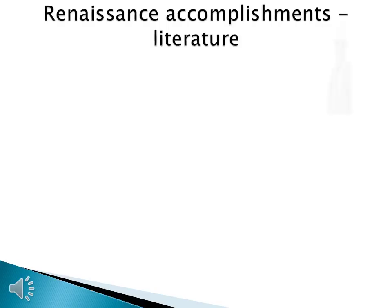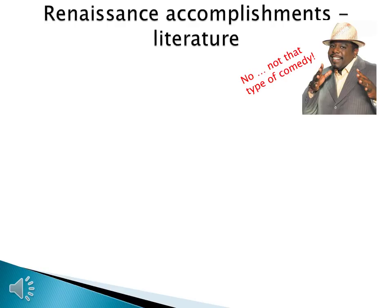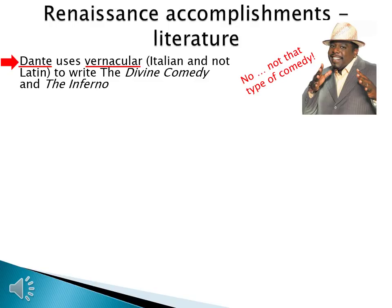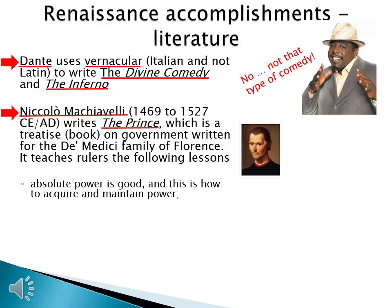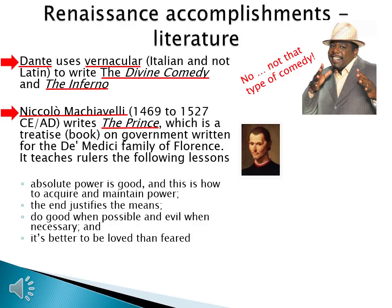Renaissance writers are also looking at things differently, so let's talk about literature. Dante uses vernacular — meaning he writes in Italian and not Latin — to write the Divine Comedy and the Inferno, so ordinary Italians can now read these books in their own language. Niccolò Machiavelli, around from 1469 to 1527 CE, writes The Prince, a treatise on government written for the de' Medici family of Florence. It teaches rulers that absolute power is good, the end justifies the means, do good when possible and evil when necessary, and it's better to be loved than feared.